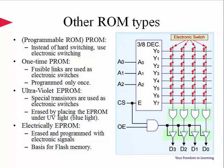Moving from the previous example, we would like to solve the inflexibility issue due to hardwired connections. Instead of hardwiring the connections, we can employ electronic switches to produce different types of ROMs. Here are all the possibilities available in the market. The first one is called programmable ROM, or PROM, where electronic switching is used as shown on this slide. The other type is one-time PROM — it uses fusible links as electronic switches and can be programmed only once.